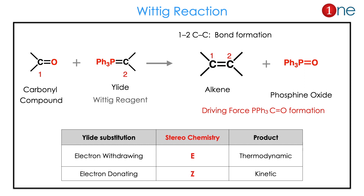The important thing here is selectivity. Electron-withdrawing groups on the ylide form the E-alkene, which is the thermodynamic product. If it is an electron-donating group, you get the Z-alkene, which is the kinetic product. So the substituent effect decides the stereochemistry.